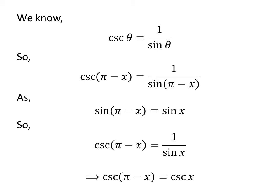We know, 1 upon sin of x is equal to cosecant of x. So, cosecant of pi minus x is equal to cosecant of x.